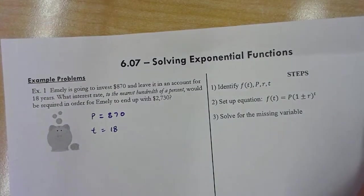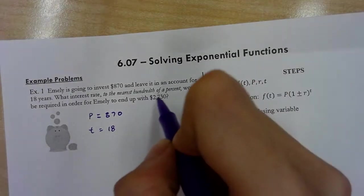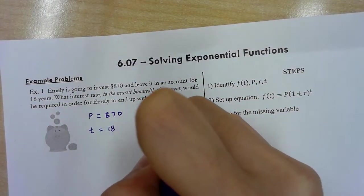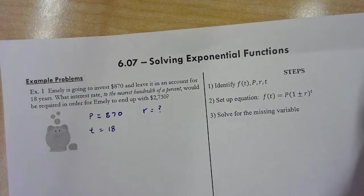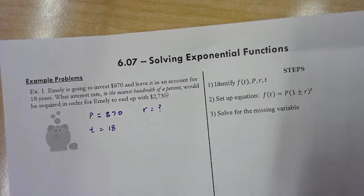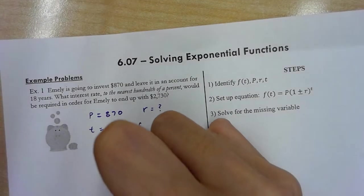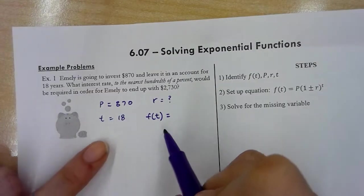So that's the unit of time, so t is 18, and then what interest rate to the nearest hundredth of a percent? We're talking r is what we do not know.